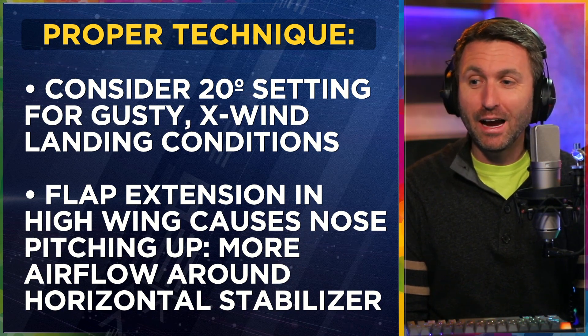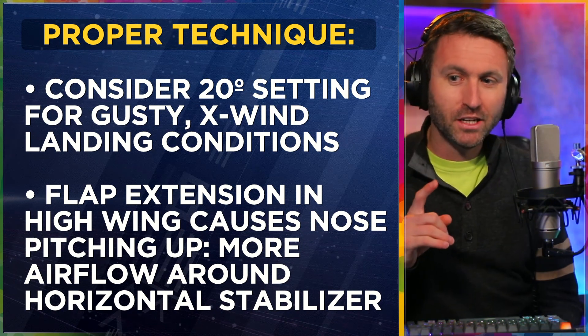Flap extension in a high-wing like a Cessna 172 causes more nose pitching up — more airflow around the horizontal stabilizer. Beginning pilots realize this is happening but don't exactly know why. When the wings are up high and you put the flap down, you're getting more of that airflow to come across the horizontal stabilizer on the tail. The horizontal stabilizer doesn't actually lift the tail up — the more effective it is, the more tail-down force it provides. So if the flaps are directing more air over that horizontal stabilizer, it's pushing the tail down, which pushes the nose up. That's why sometimes when you put in your flaps at flap speed, you feel the nose kind of pitch up and you put forward pressure to bring it back down.